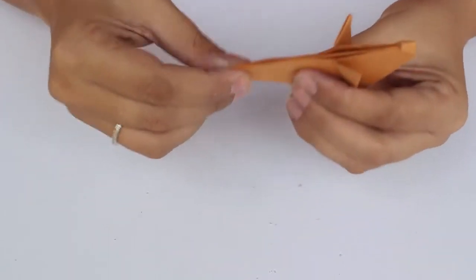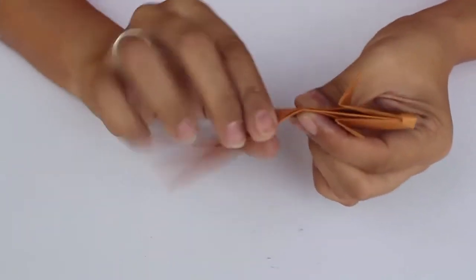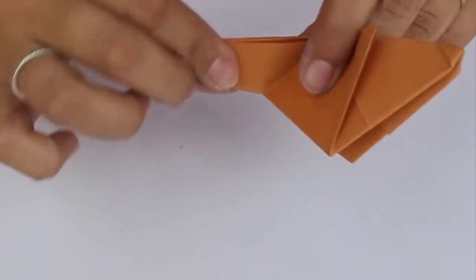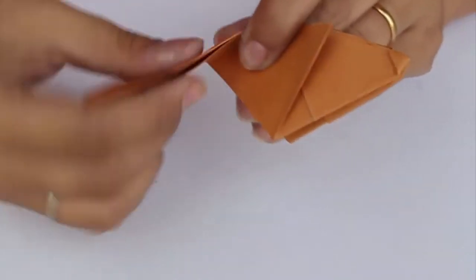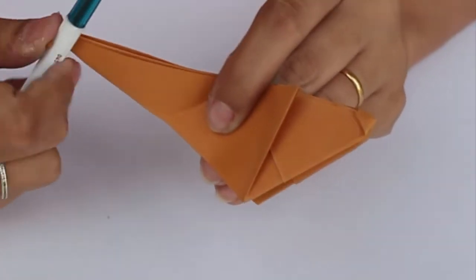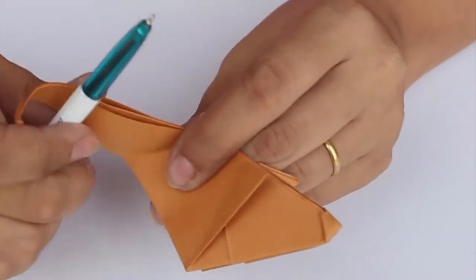We are almost done except that you need to fold this at an angle like this. And now, since no mouse has an angular tail like this, take a pen and roll the tail together like this.